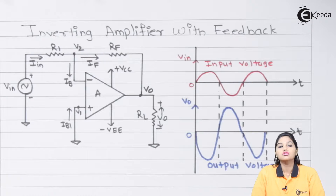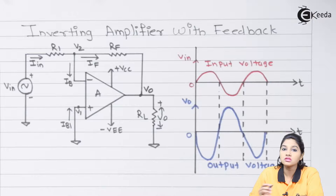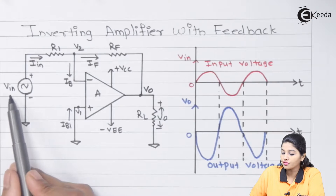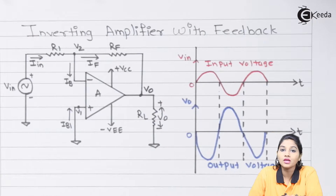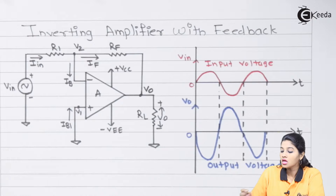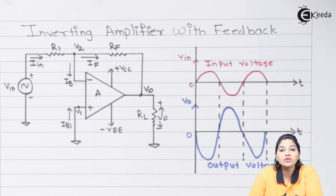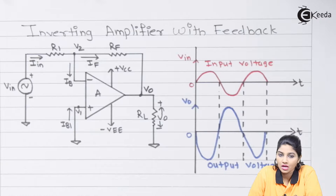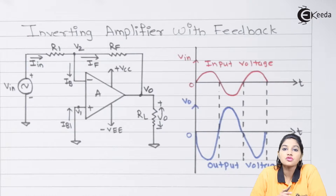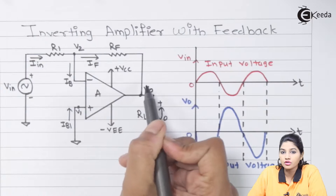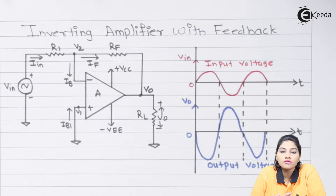Now let's see how we can use an inverting amplifier in closed loop configuration. In the circuit, the signal to be amplified, V_in, is applied to the negative terminal of the op-amp, that is the inverting terminal. The output signal or feedback signal is also applied to the inverting terminal. The output signal is an inverted version of the input signal.